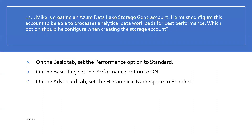Question 12: Mike is creating an Azure Data Lake Storage Generation 2 account and must configure it to process analytical data workloads for best performance. Which option should he configure? On the Basic tab, set Performance to Standard; on the Basic tab, set Performance to On; or on the Advanced tab, set the Hierarchical Namespace to Enable. Option C is the right answer — to enable best performance for analytical workloads in Data Lake Storage Generation 2, on the Advanced tab of the storage account creation, set the Hierarchical Namespace to Enable.